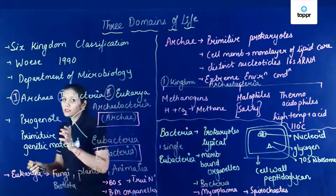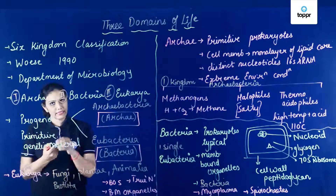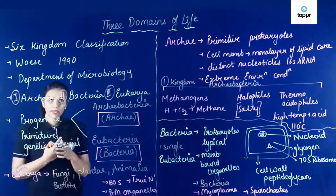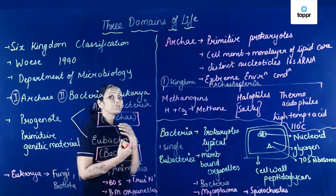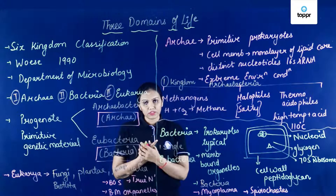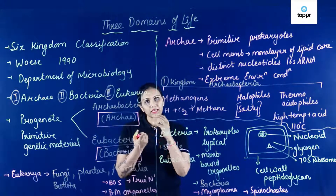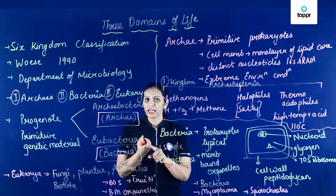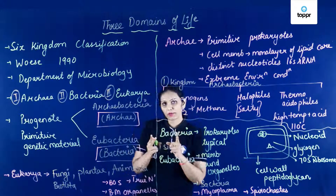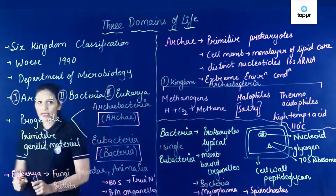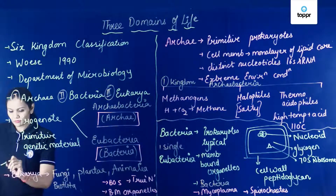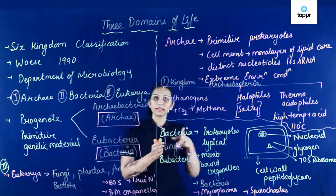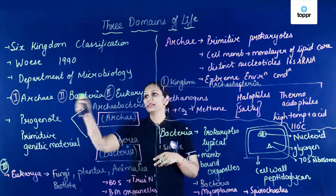Coming to Eukarya — distinguishing features kya hai? 80S type of ribosome hai. Membrane bound structures hai. Aur true nucleus hai. When we talked about the five kingdom classification system, hamne Monera, Protista, Fungi, Plantae and Animalia padha. Then Protista, Fungi, Plantae and Animalia single domain ko belong karte hai — jo hamne bola hai Eukarya. Aur typically jo Monera hai, usse divide kiya gaya hai into Archaea and Bacteria.